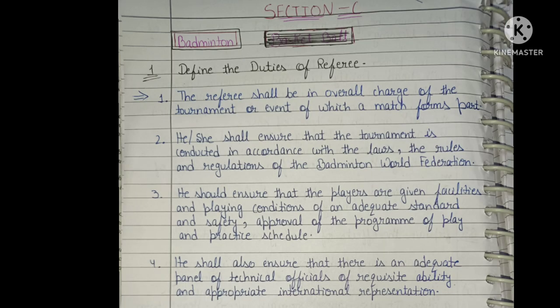Section C. Question one: define the duties of the referee. The referee shall be in overall charge of the tournament or event. He or she shall ensure the tournament is conducted in accordance with the laws, rules, and regulations of the Badminton World Federation. He should ensure that the players are given facilities and playing conditions of an adequate standard and safety, including approval of the program of play and practice schedule. He shall also ensure there is an adequate panel of technical officials of suitable ability and appropriate international representation.